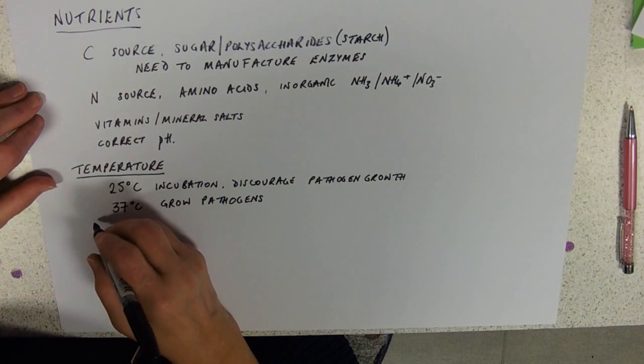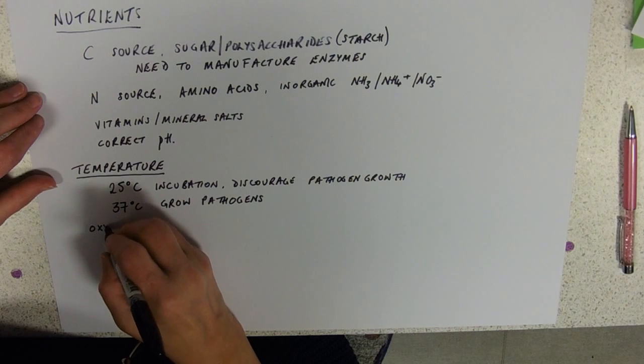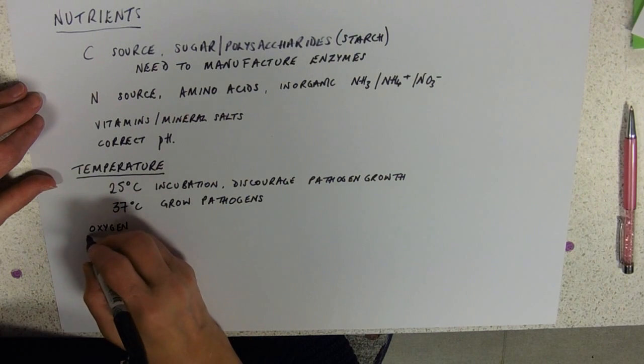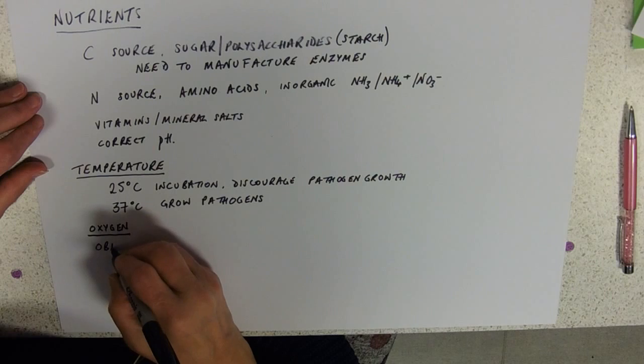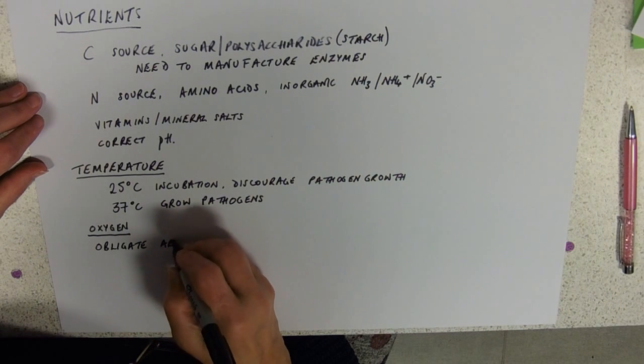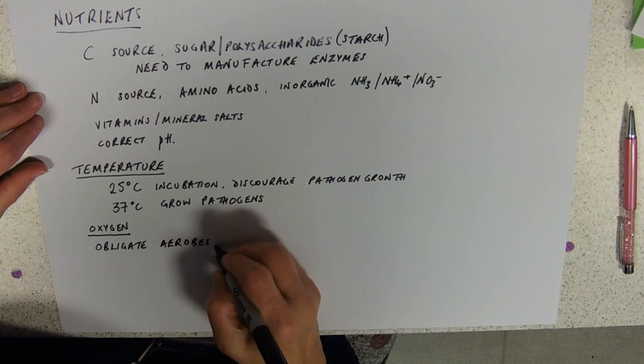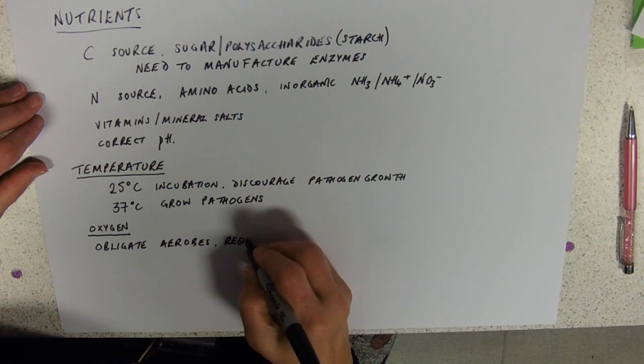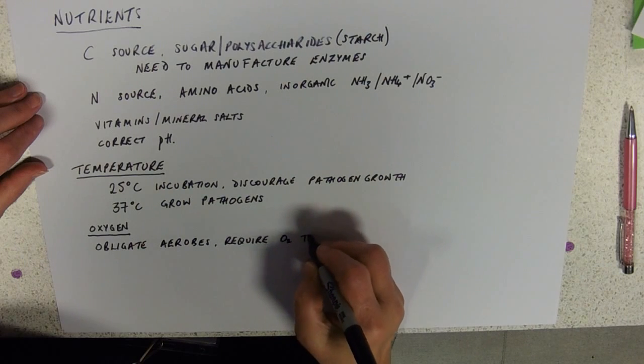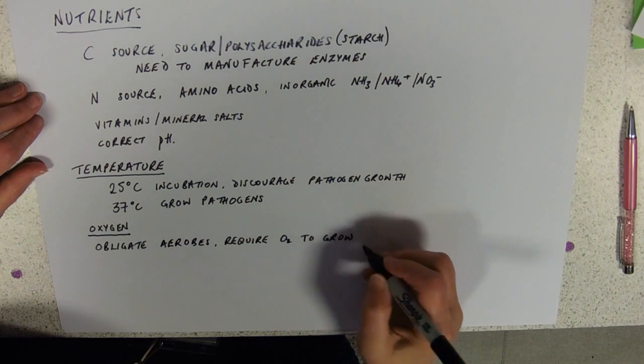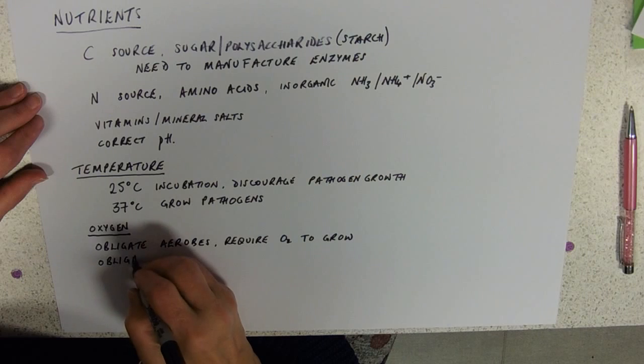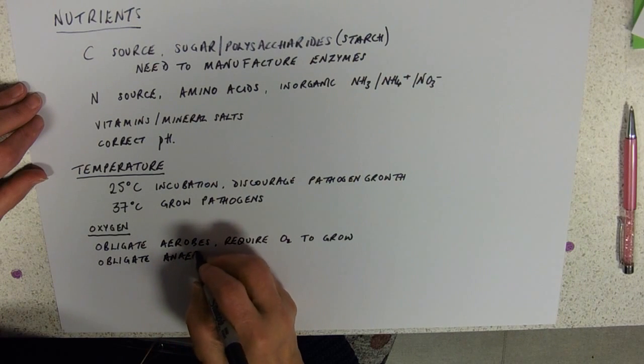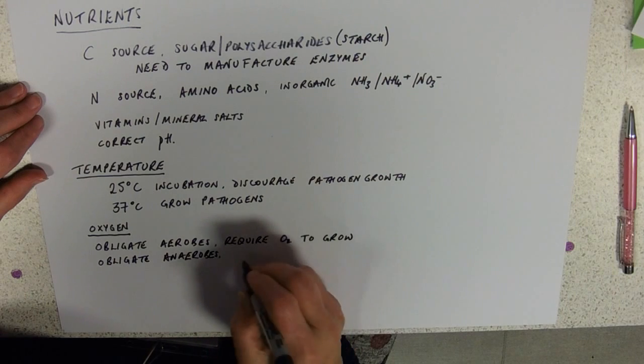And last but not least, we come to oxygen requirements. As far as your syllabus is concerned, there are three groups that you need to know. There are the obligate aerobes. So these are bacteria that require, they must have oxygen present, so these require oxygen to grow. They'll only grow if oxygen is present.